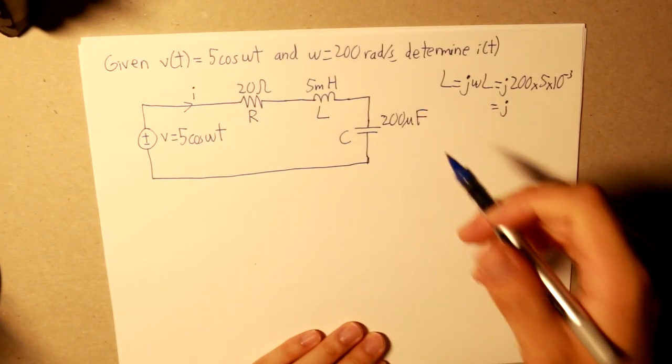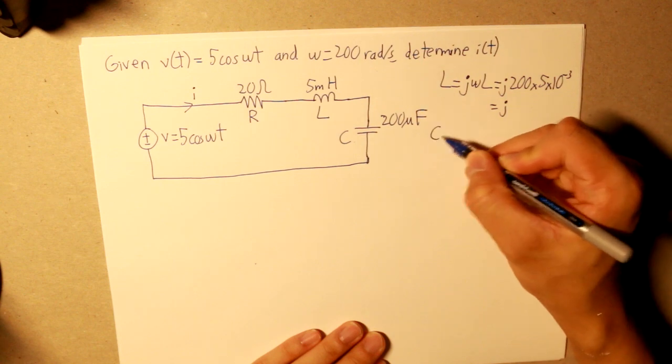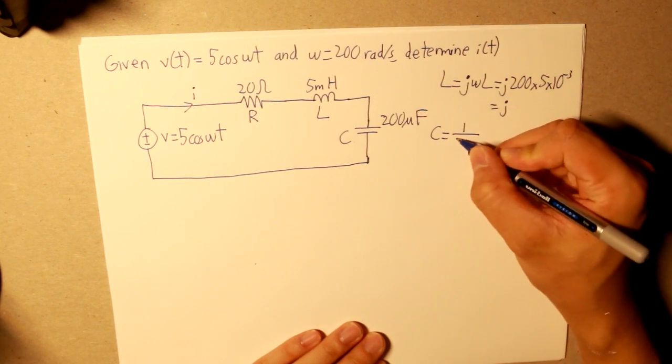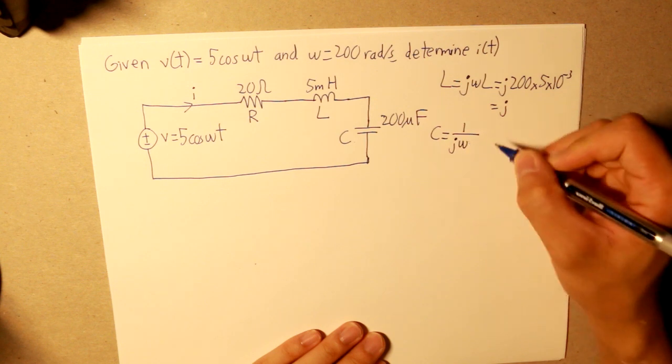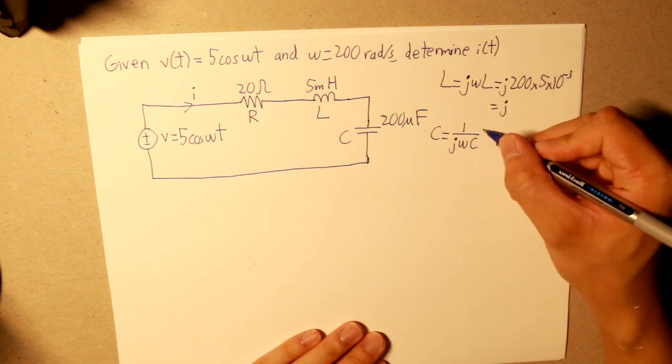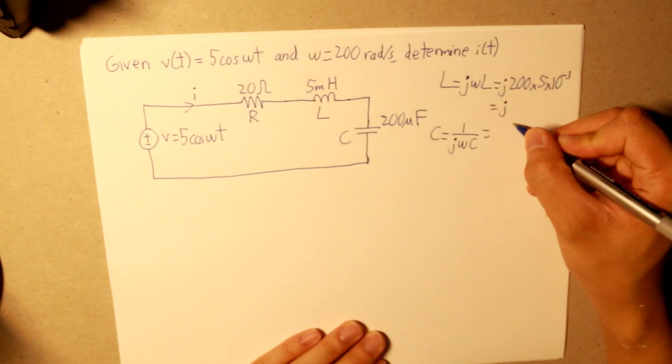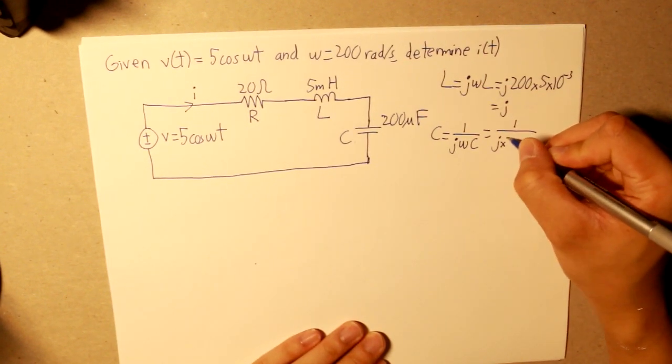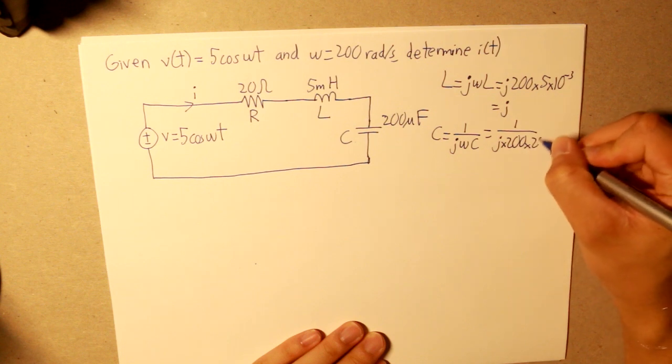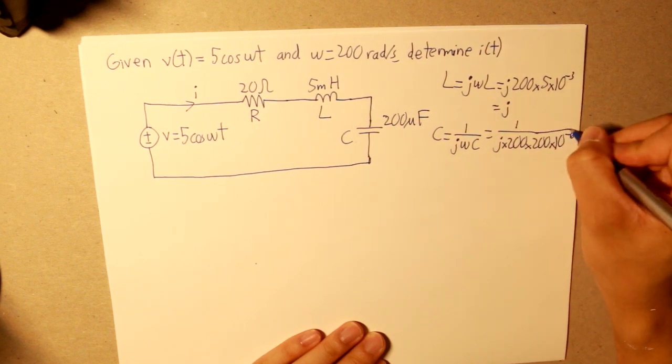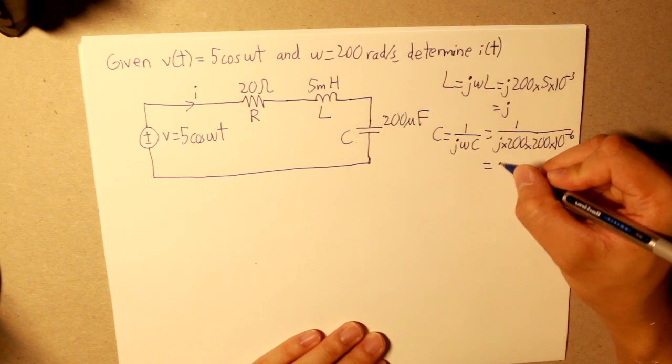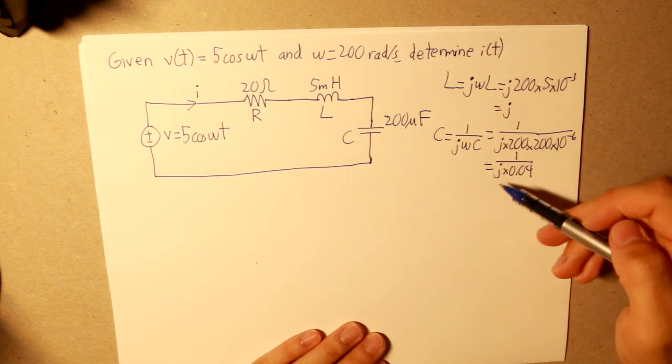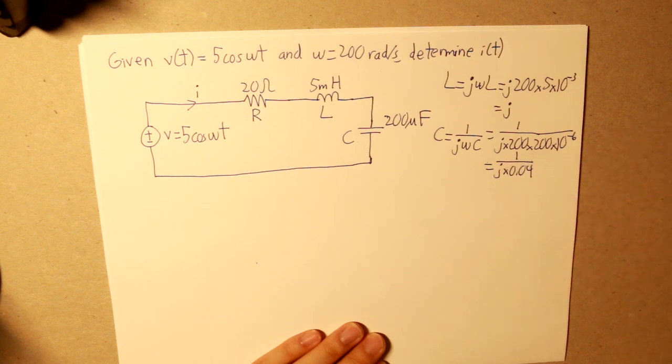Now let's go to C, to our capacitor. We know that for our capacitor, our equation would be 1 over j times angular frequency times the capacitor. And that will be equal to 1 over j times 200 times 200 times 10 to the negative 6.